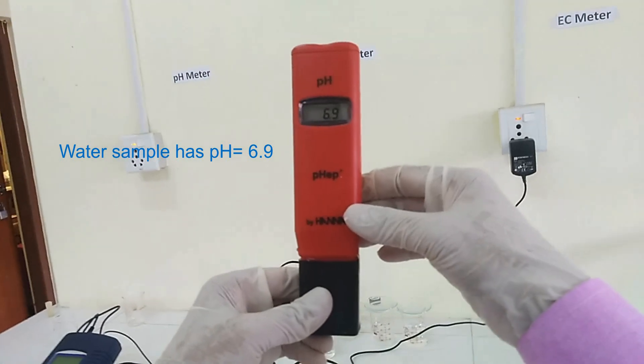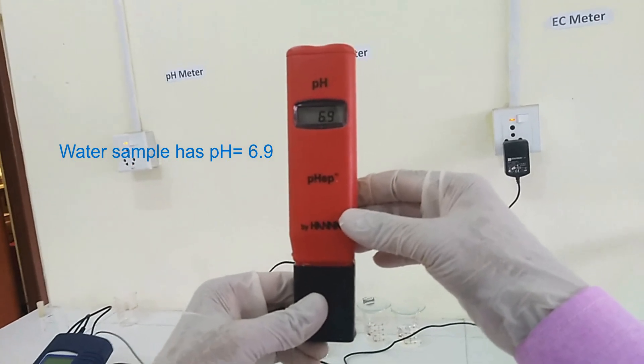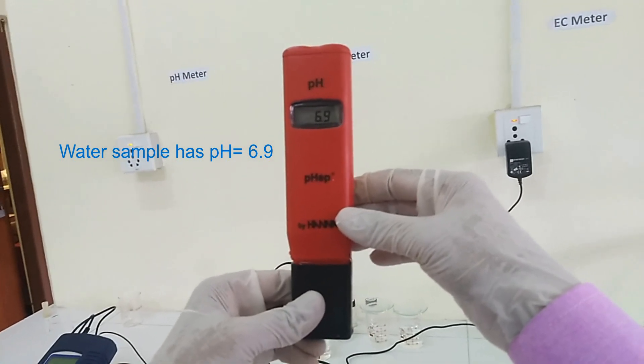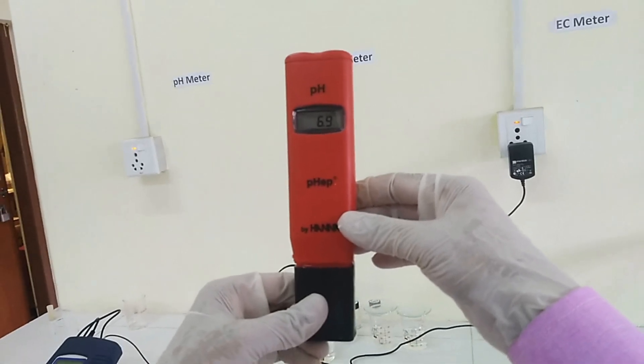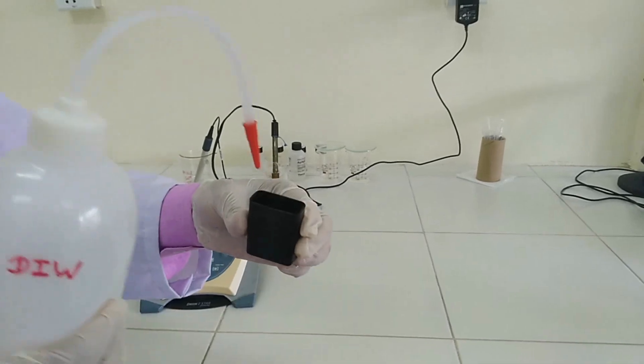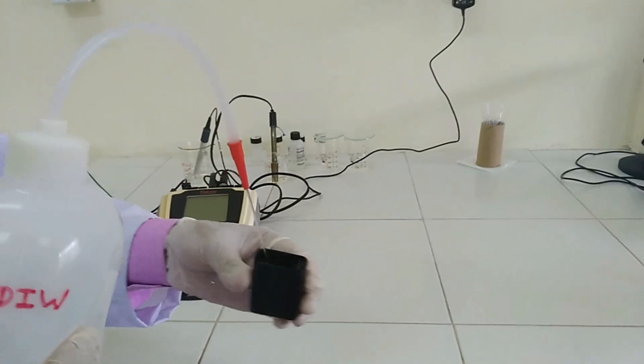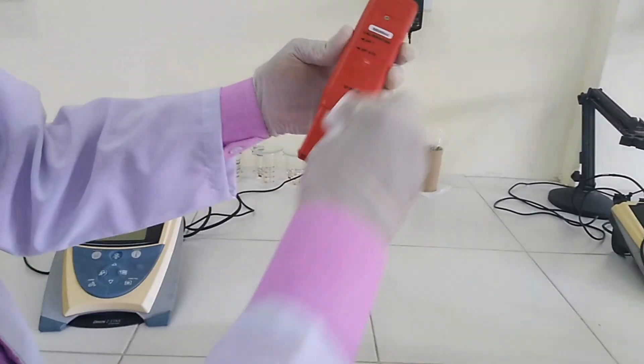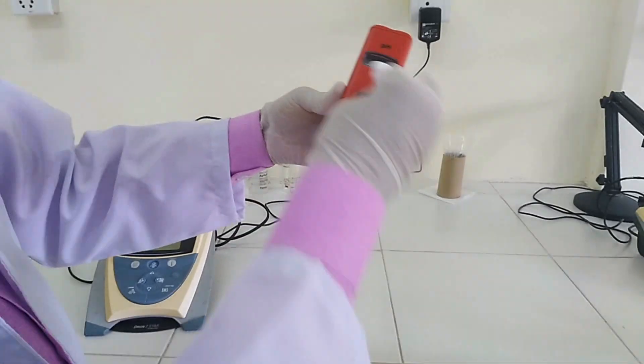In this case it was found to be 6.9. After measurement switch off the instrument and again rinse with the deionized water and make it dry. Always rinse the pH meter and cap before and after each measurement.